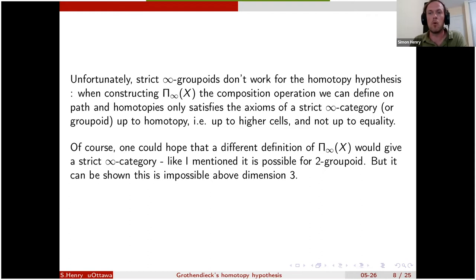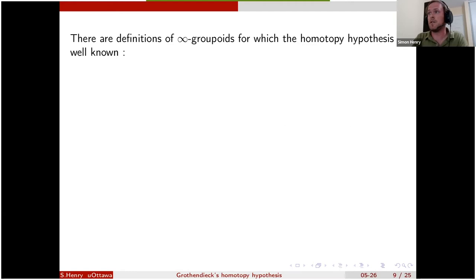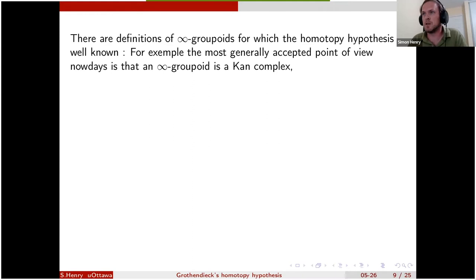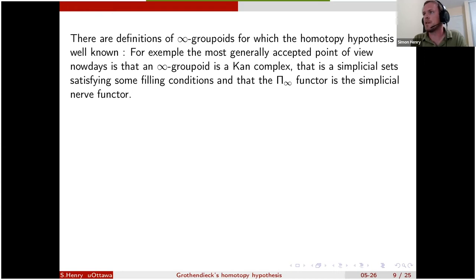So the question is to find a definition of infinity-groupoid and to prove the homotopy hypothesis for that definition. There are definitions of infinity-groupoid for which the homotopy hypothesis is well-known — for example, you could trivially say an infinity-groupoid is just a space, but that accomplishes nothing. But there are non-trivial definitions for which the homotopy hypothesis was already known before Grothendieck's work.